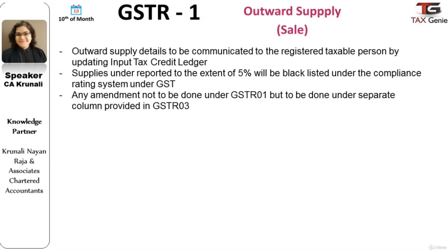It is noteworthy that supplies underreported to the extent of 5% are subject to scrutiny. Any amendment which requires to be done cannot be done through GST Return 1 but has to be done under a separate column provided in GST Return 3. This simply means that once GST Return 1 is filed, you cannot make any amendments to this return. You can do the amendments or adjustments at the time of filing the monthly return in GST Return 3.